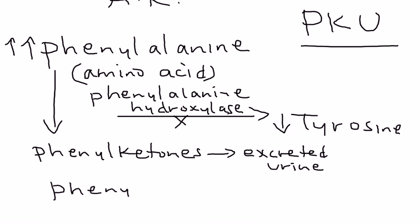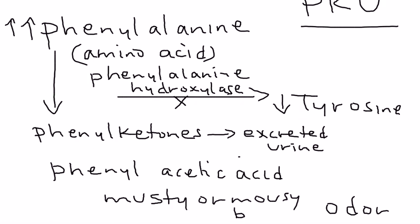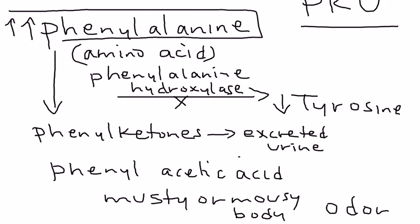One of the metabolites is known as phenylacetic acid, which is responsible for creating a very specific odor in the child — classically described as a musty or mousy odor, and this is commonly tested on clinical vignettes. The excess phenylalanine can also start to accumulate in the brain, leading to the disease's symptoms.